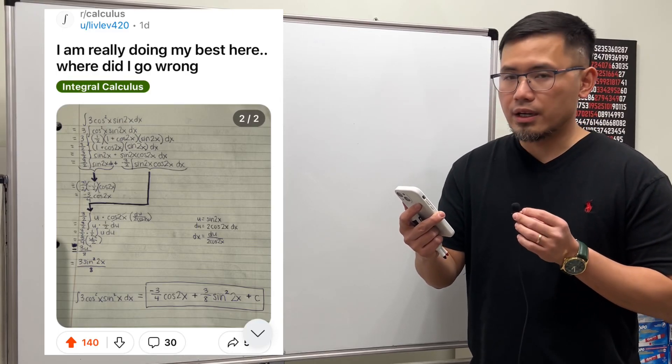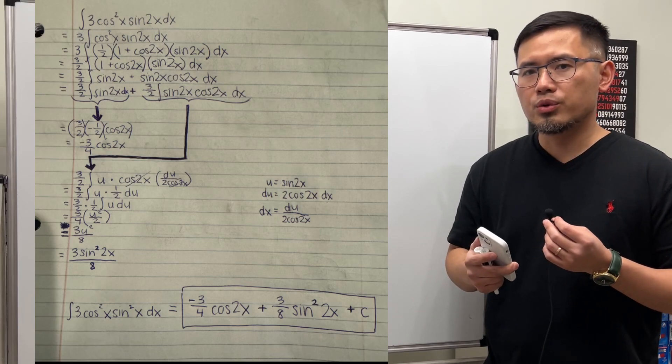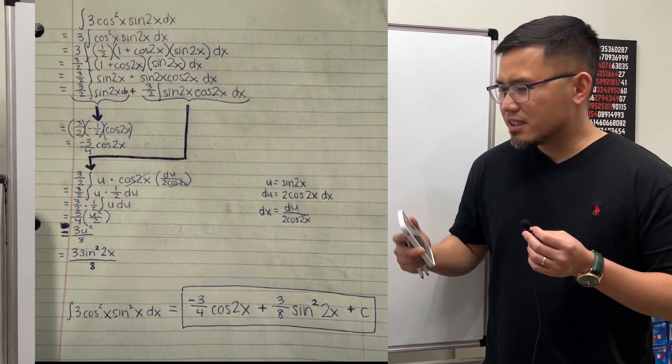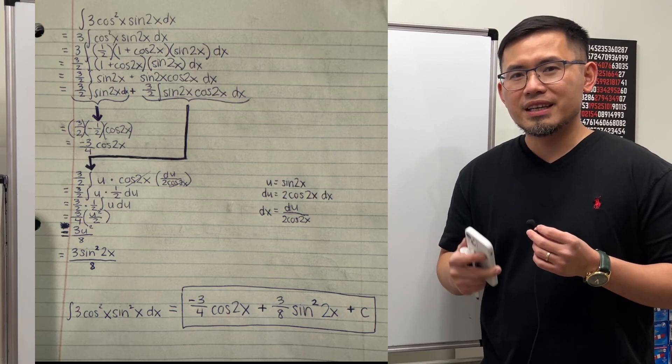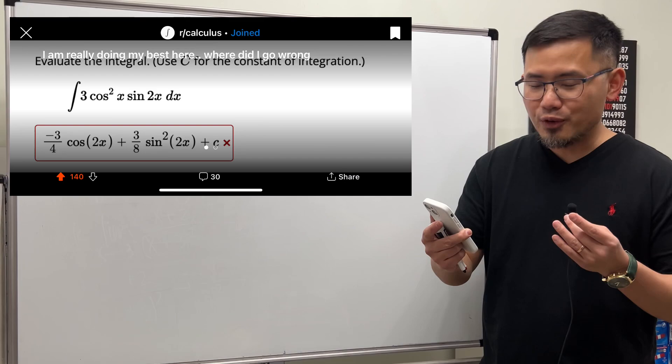I'm really doing my best here. Where did I go wrong? So here's your work and I checked all the steps. Let me tell you, nothing wrong with it. This is a perfect answer. If you have this answer on my exam, I will give you full credit, but it's just that you're answering this question on a computer software.